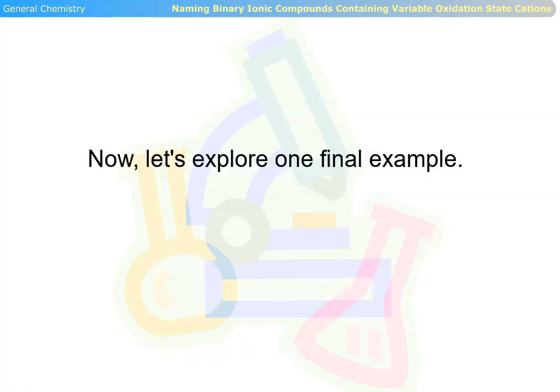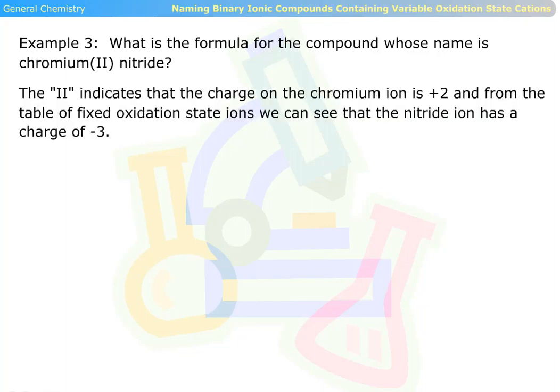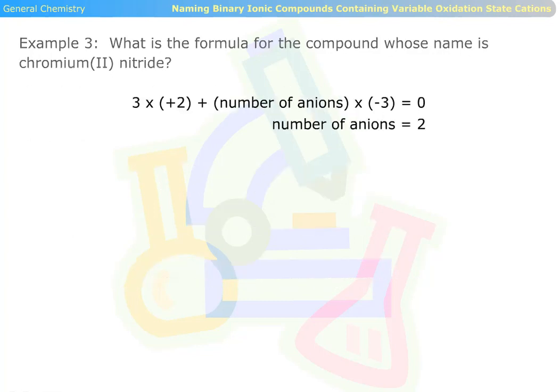Now let's explore one final example. Example three. What is the formula for the compound whose name is chromium(II) nitride? The two indicates that the charge of the chromium ion is positive two, and from the table of fixed oxidation state ions, we can see that the nitride ion has a charge of negative three. If we assume that there is one cation, the number of anions works out to be two-thirds. We need three cations for the formula to give a whole number of anions. Three times positive two plus the number of anions times negative three equals zero. So the number of anions equals two. The formula of this compound is Cr3N2.